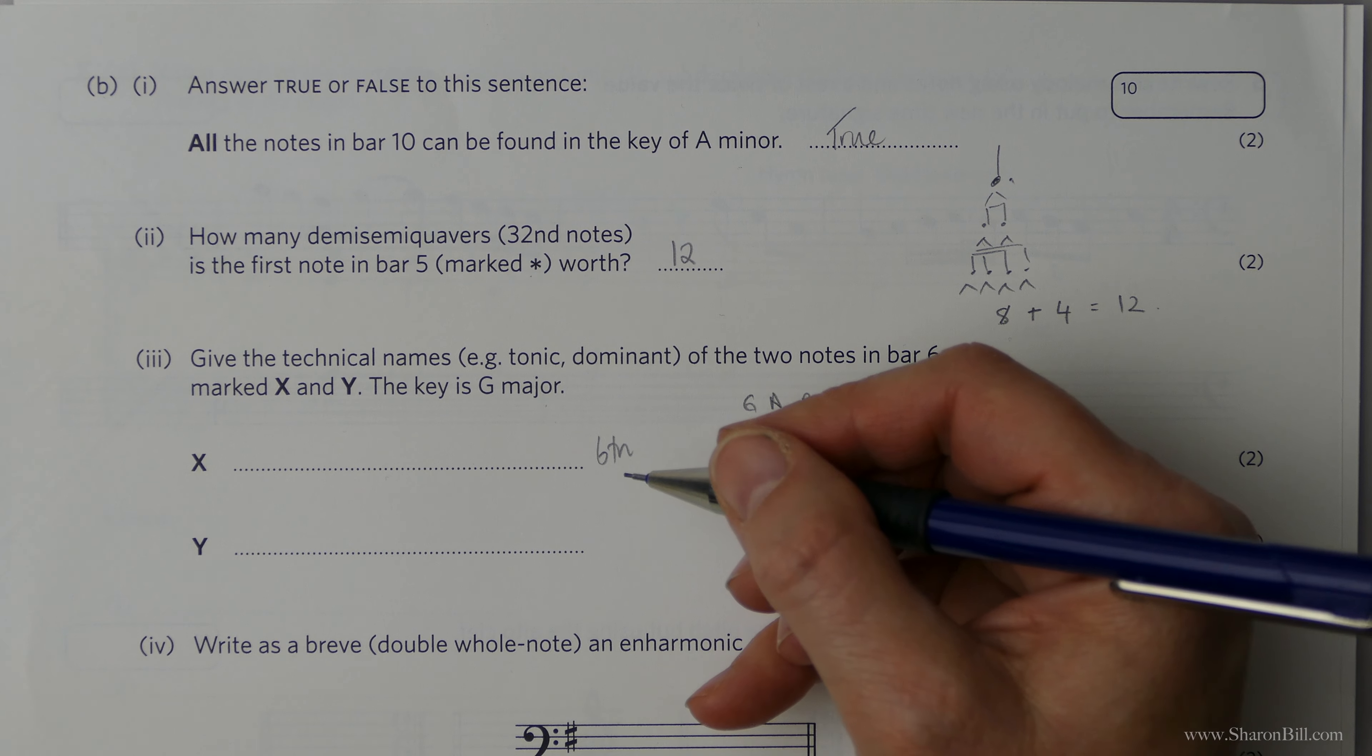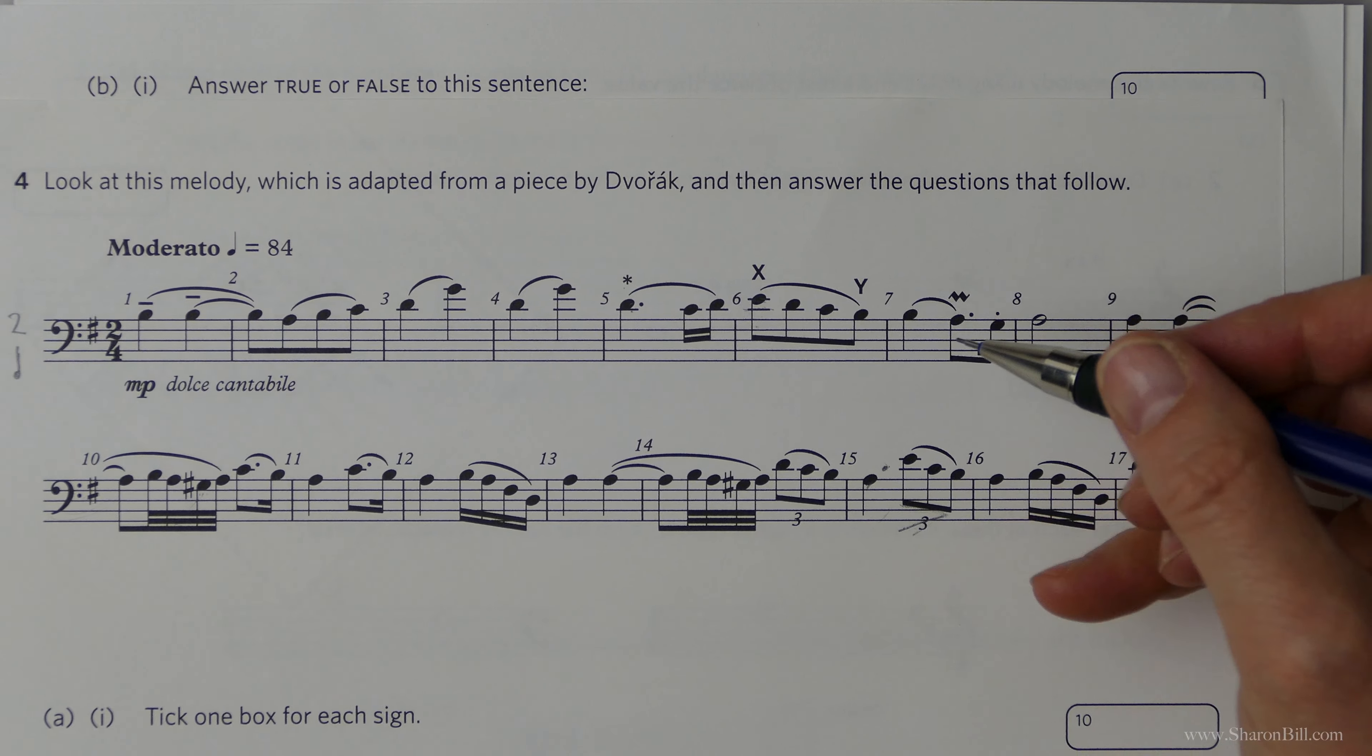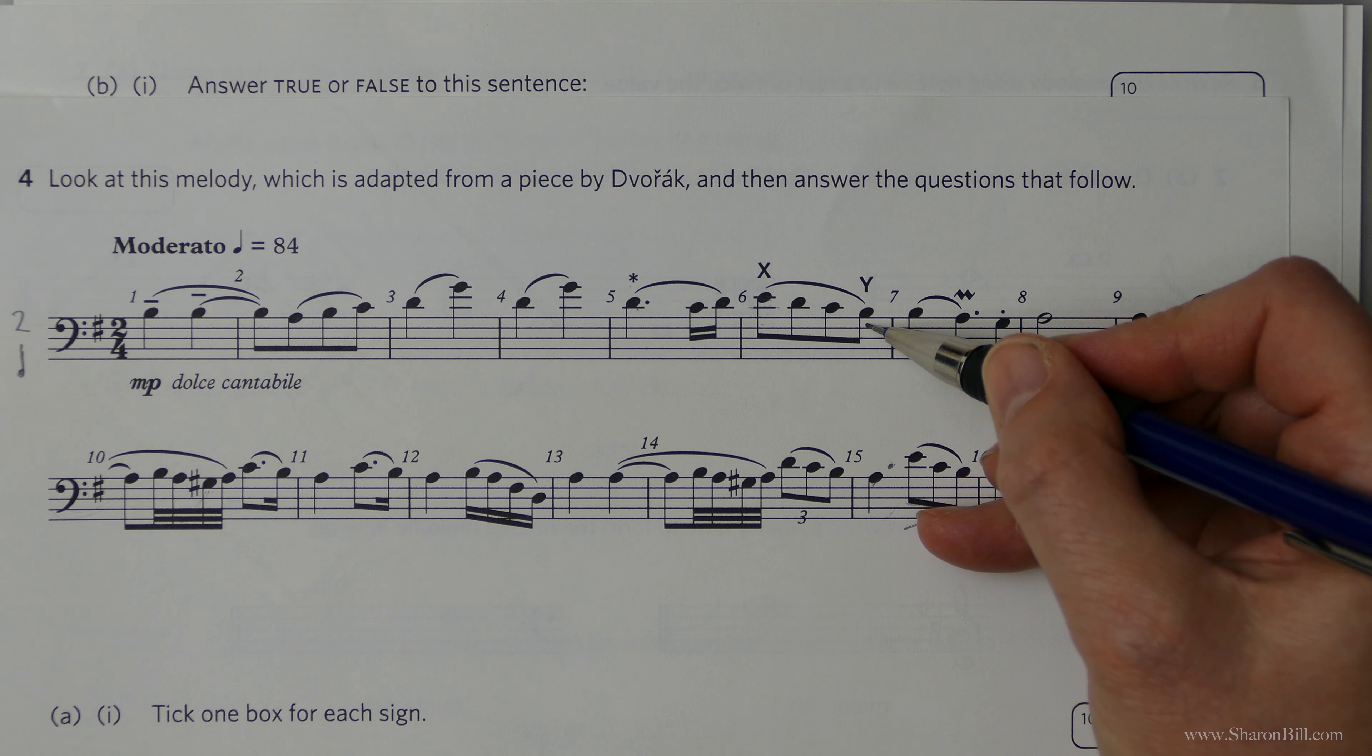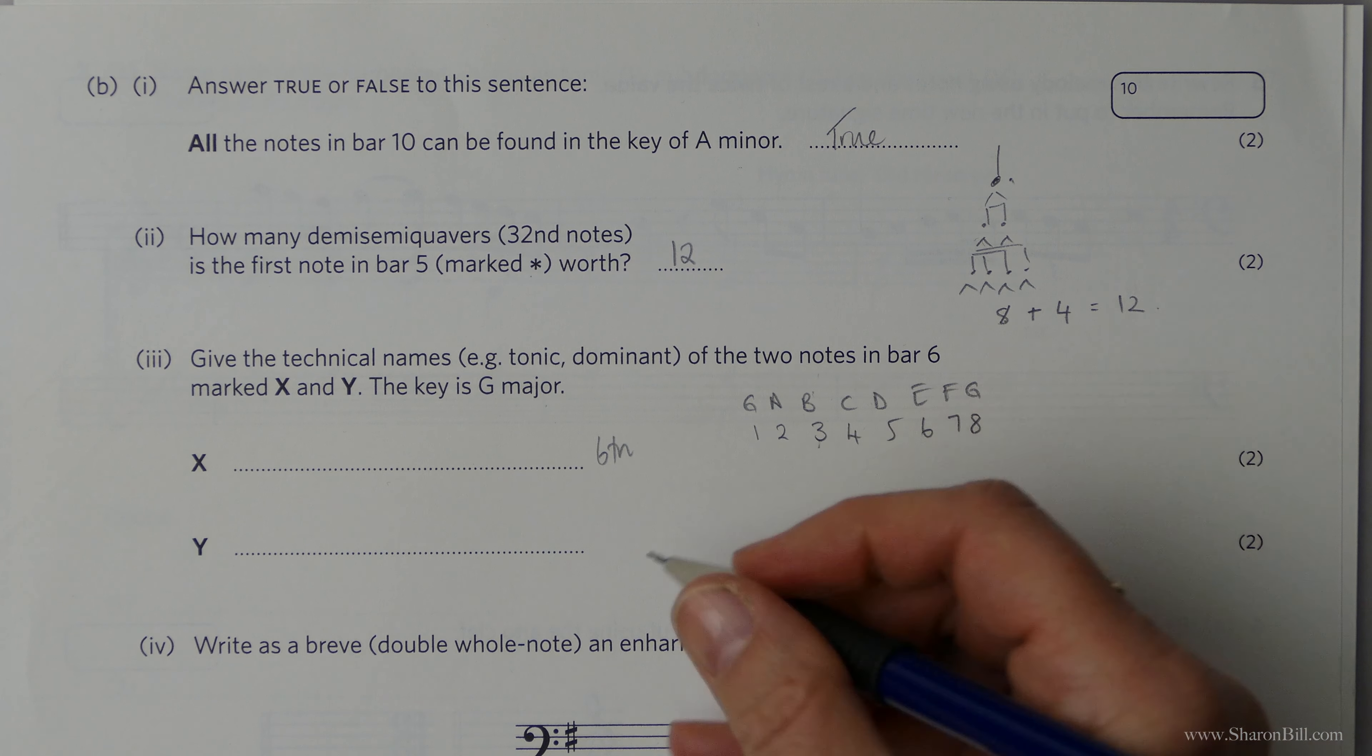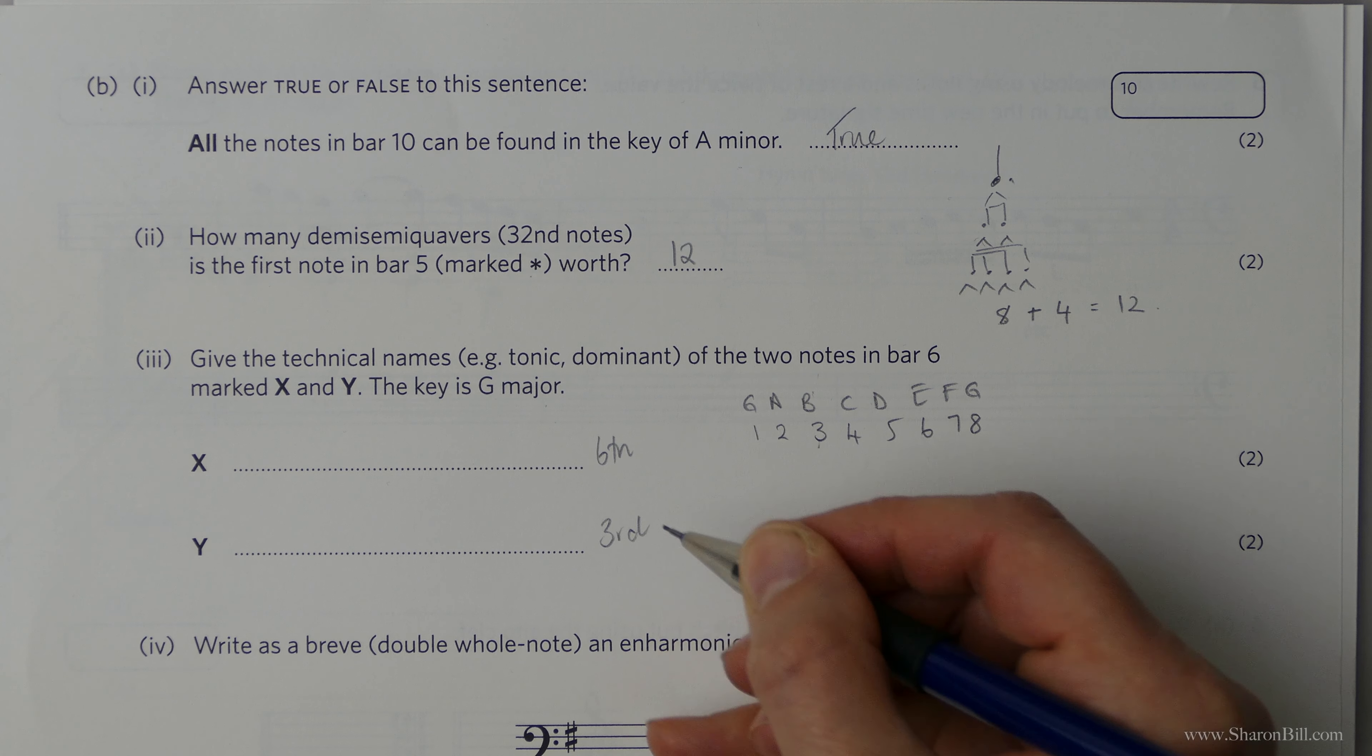And then Y, back we go, counting from the G. G, A, B. G, A, B. One, two, three. And the third is B, so double checking that is the third. That's correct.